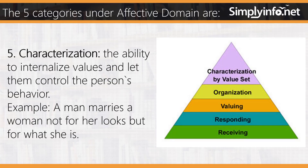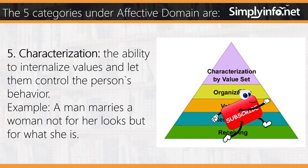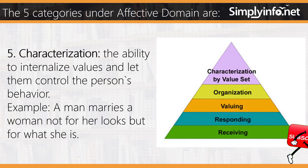Number five: characterization — the ability to internalize values and let them control the person's behavior. Example: a man marries a woman not for her looks, but for who she is.